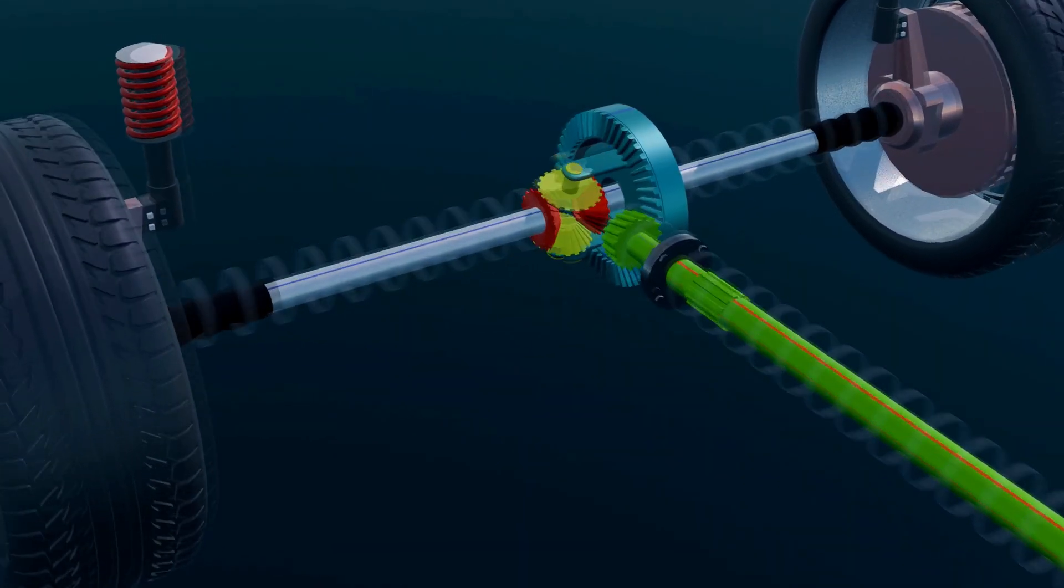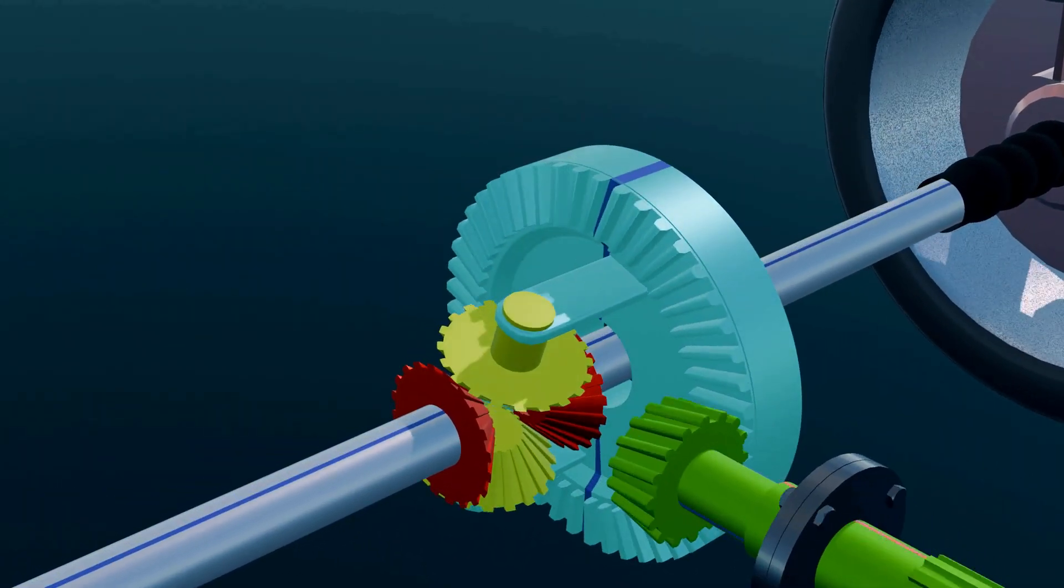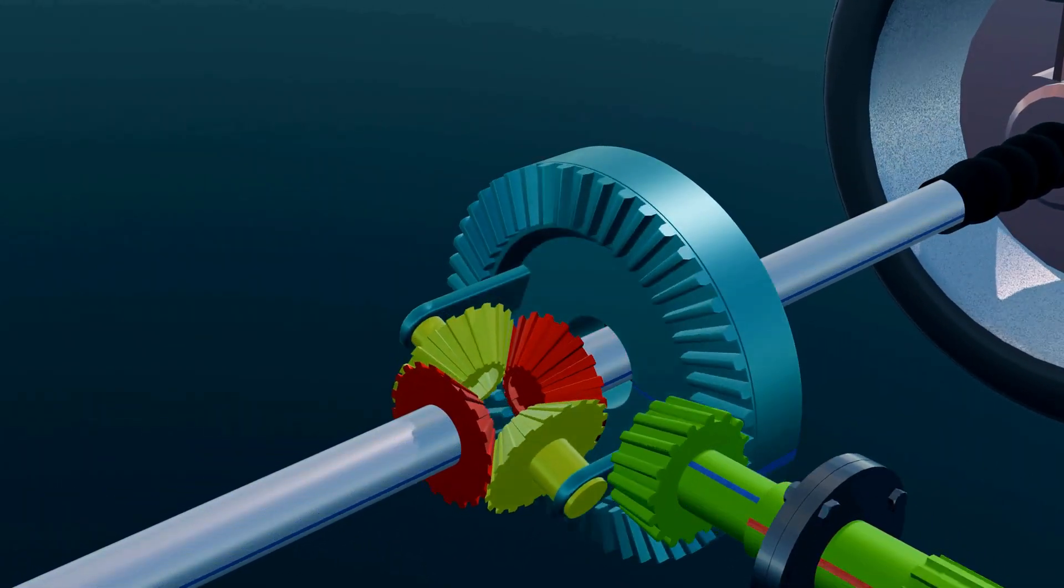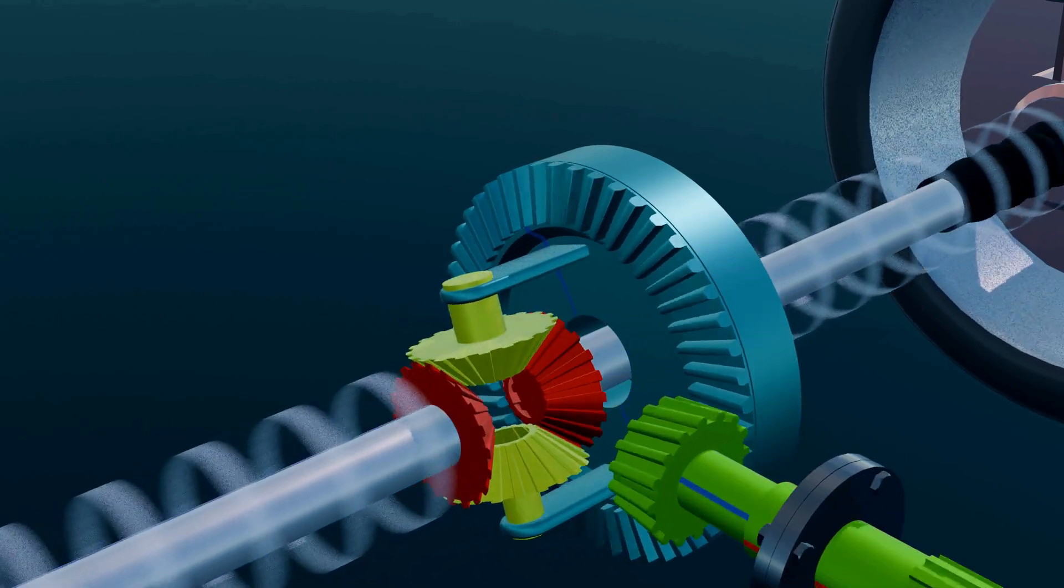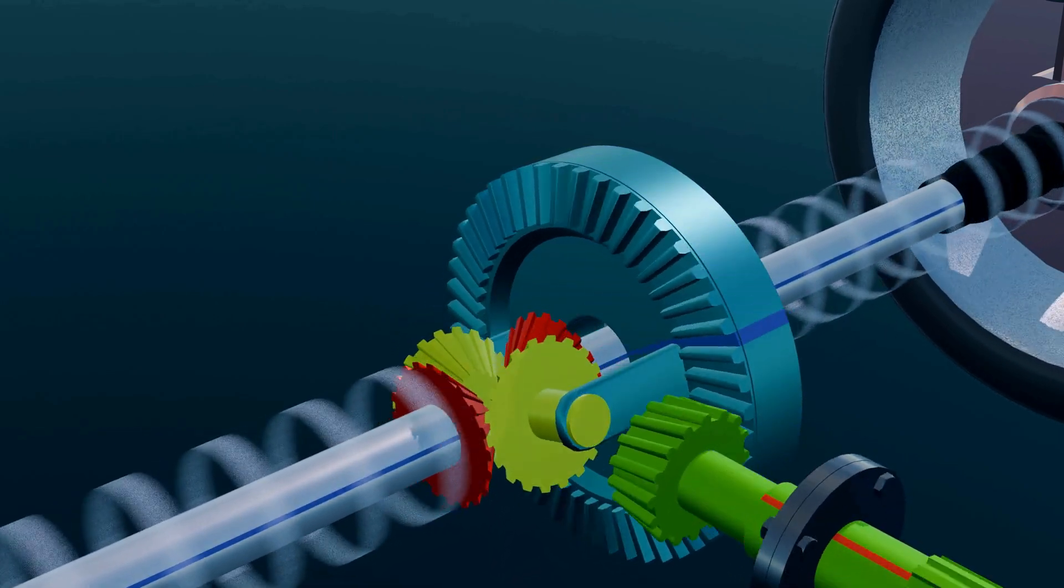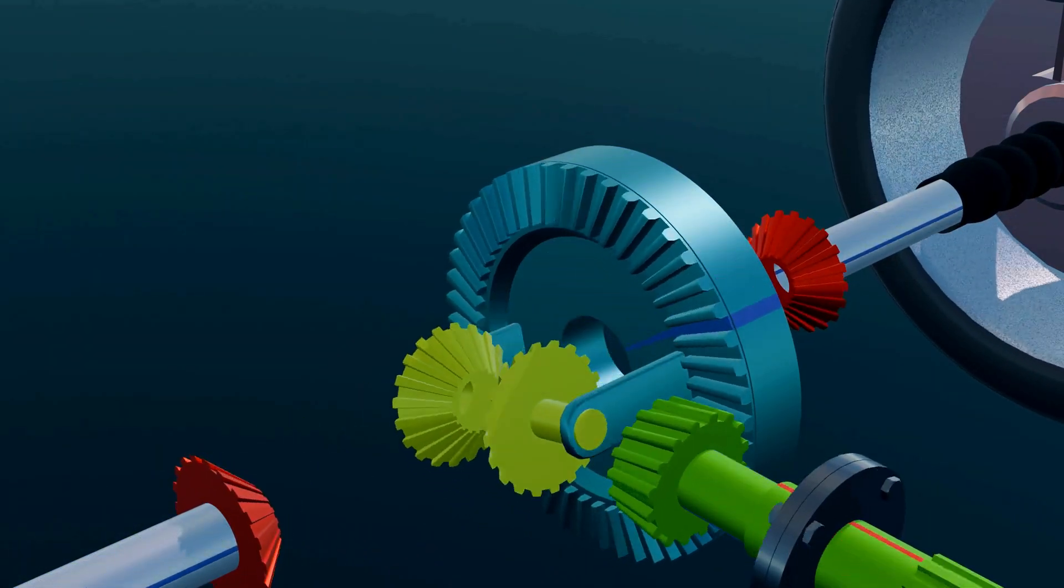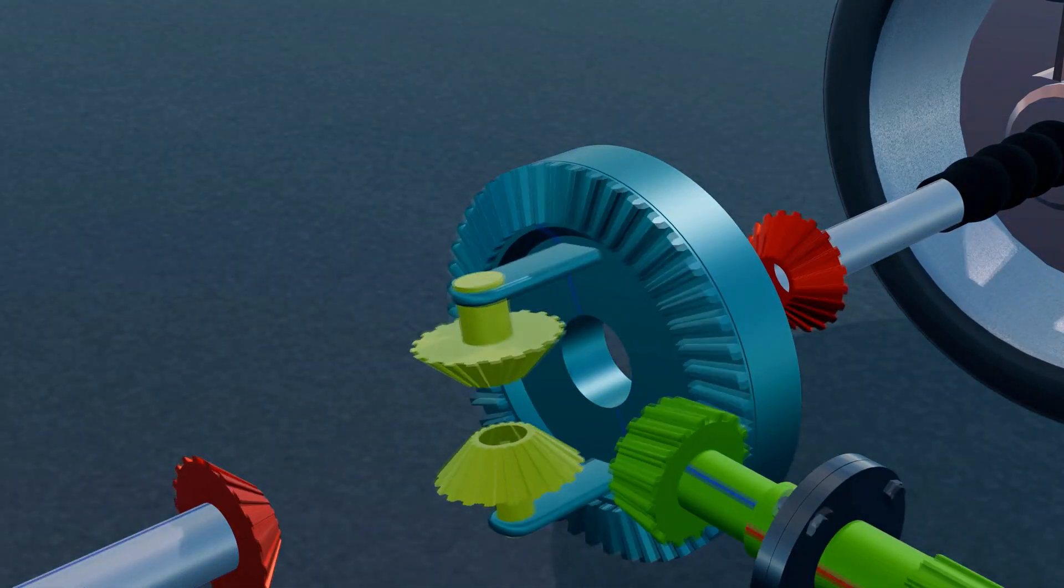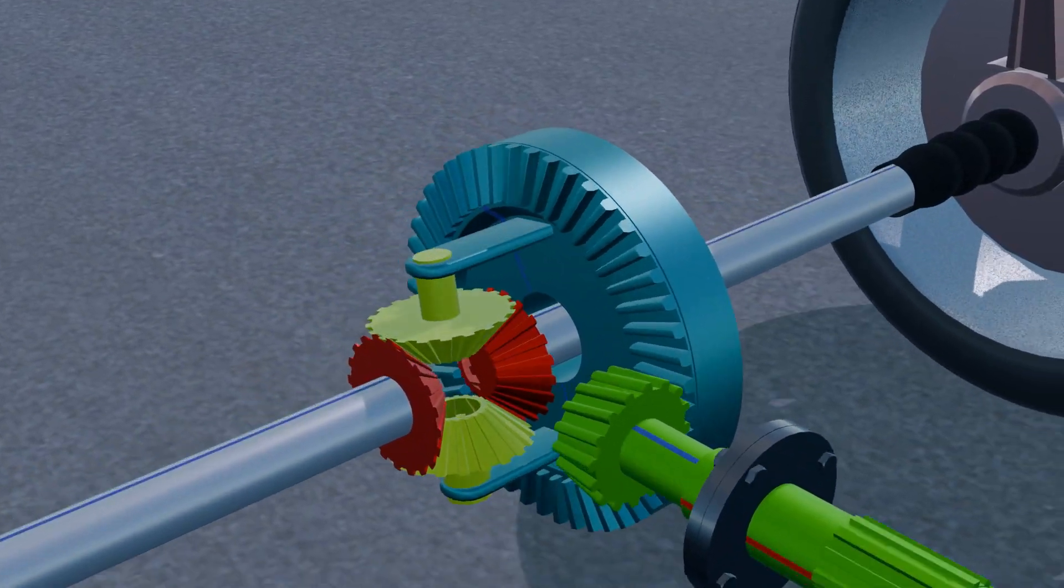This is actually a brilliant gear system. Engine power enters the ring gear, which is connected to the spider gear. The spider gear then distributes equal power to both axle shafts, sending it to each wheel. The spider gear rotates in two ways: first, along with the ring gear, and second, on its own axis. On a straight road, it simply rotates with the ring gear, keeping both wheels spinning evenly.